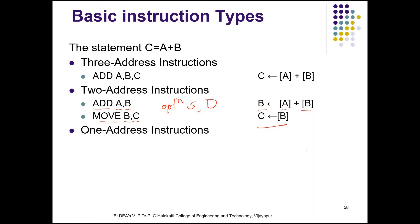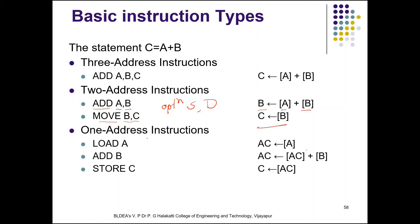The third type is the one-address instruction. The general format is: operation, source or destination. The instruction specifies only one memory operand; the other operand is implied to be a processor register called the accumulator. All operations are performed on the contents of the accumulator. For example, 'Add B' means the content of memory location B will be added to the content of the accumulator, and the sum is placed back in the accumulator.